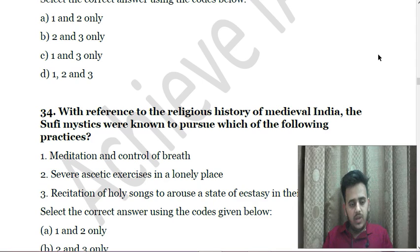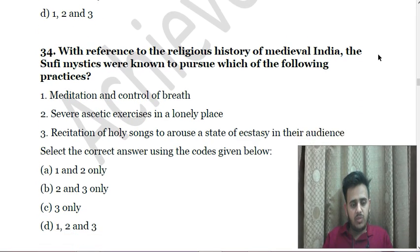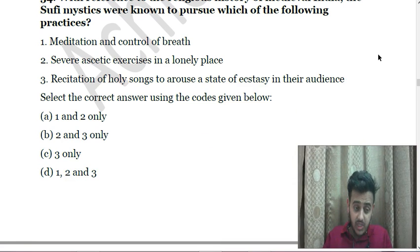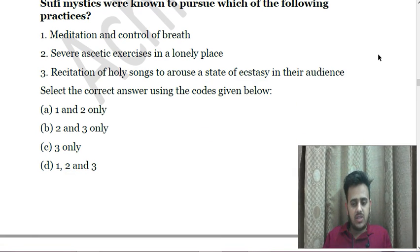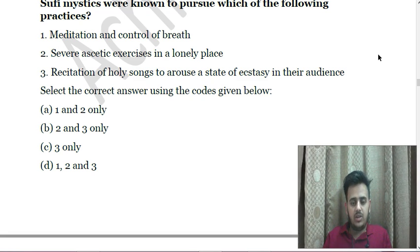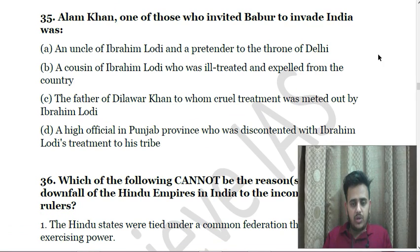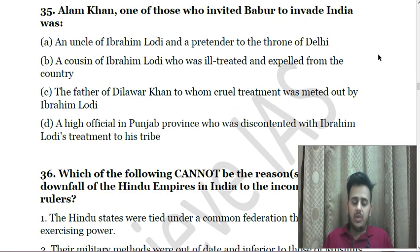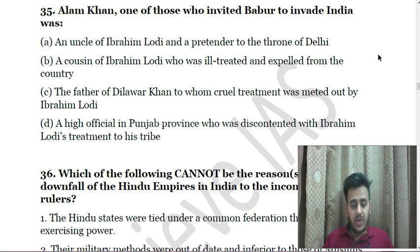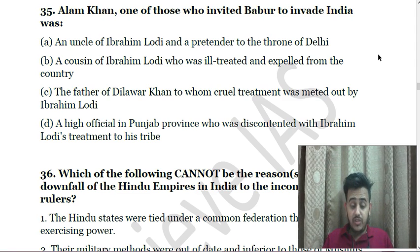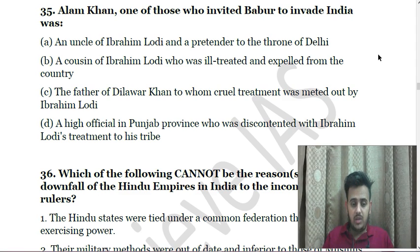Next: With reference to the religious history of medieval India, the Sufi mystics were known to pursue which of the following practices — First, meditation and control of breath; Second, severe ascetic exercises in a lonely place; Third, recitation of holy songs to arouse the state of ecstasy in their audience. Next: Alam Khan, one of those who invited Babur to invade India, was — A. An uncle of Ibrahim Lodi and pretender to the throne of Delhi; B. A cousin of Ibrahim Lodi who was ill-treated and expelled; C. The father of Dilawar Khan to whom cruel treatment was meted out by Ibrahim Lodi; D. A high official in Punjab province discontented with Ibrahim Lodi's treatment of his tribe.